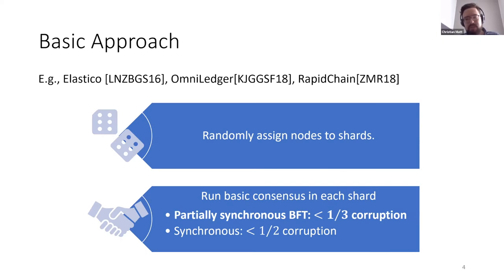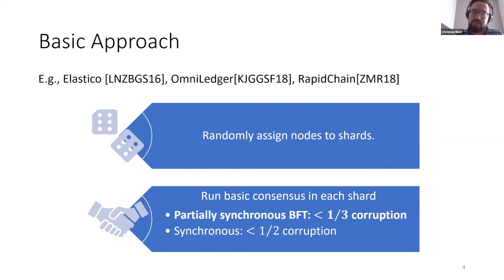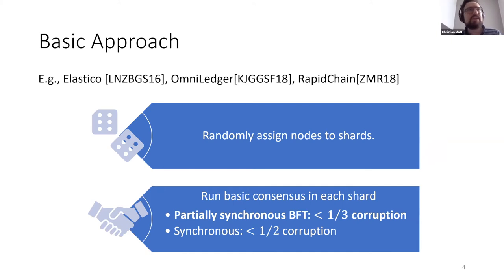If you look at existing sharding solutions at a very high level, they essentially work in the same way. Examples of papers that consider sharding are Elastico, OmniLedger, and RapidChain. What they all do is basically randomly assign nodes to the different shards, and then within the shards they run an essentially normal consensus algorithm. This random assignment is important — you cannot let nodes choose which shard they want to go into, because if you do, all malicious nodes can go into the same shard, and then you would have too much corruption in that shard.